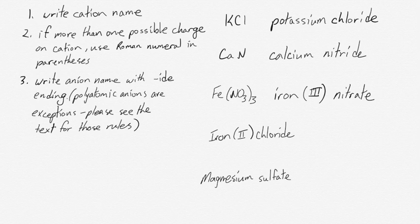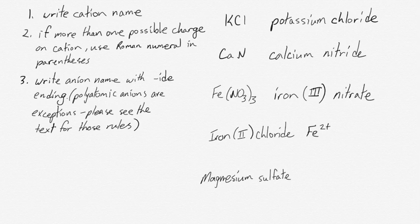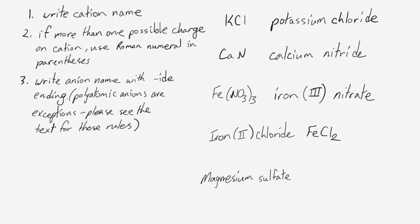The next example is iron two chloride. Iron two implies that it's the Fe2 plus ion that's involved. And chloride, as we've seen earlier, is a Cl minus ion. So there have to be two minus charges to balance out that two plus. So that means we have FeCl2.